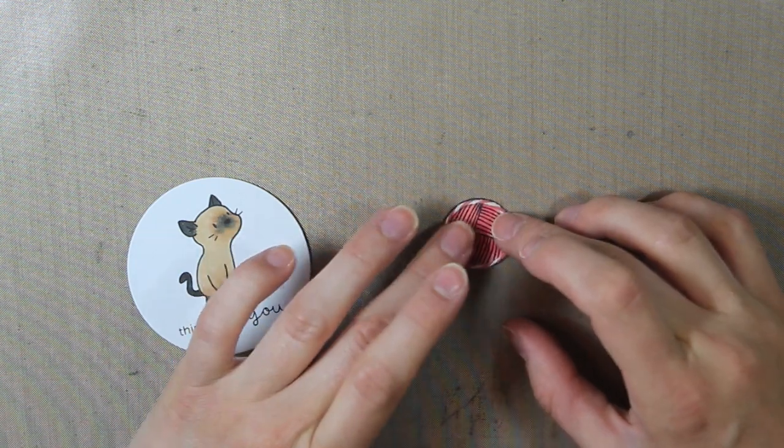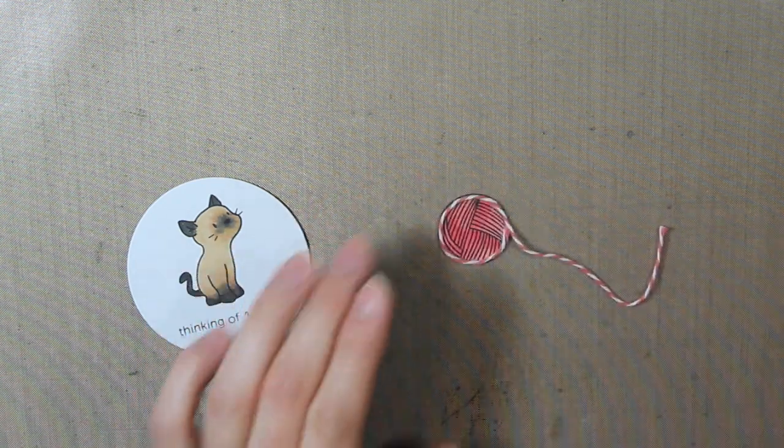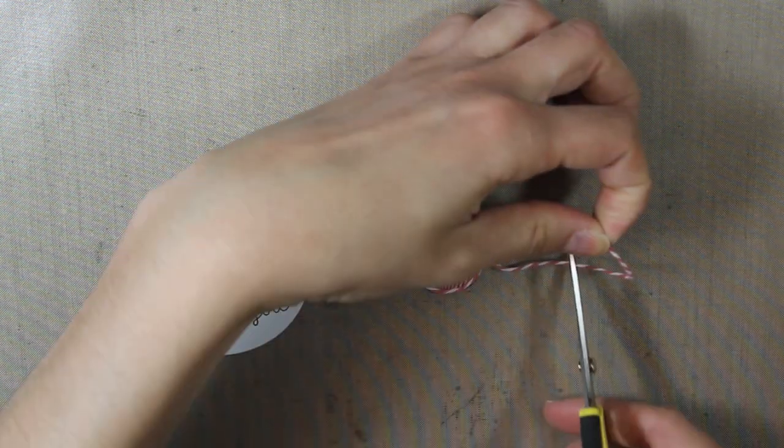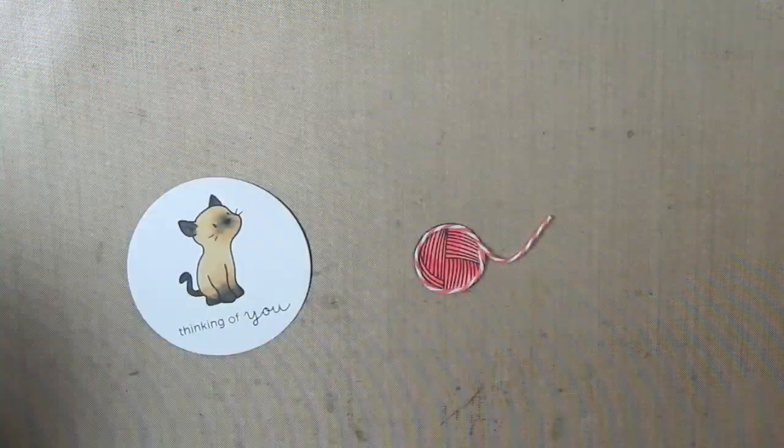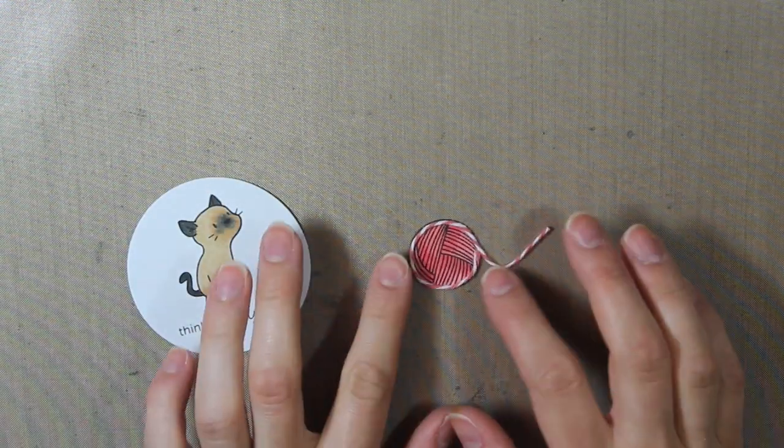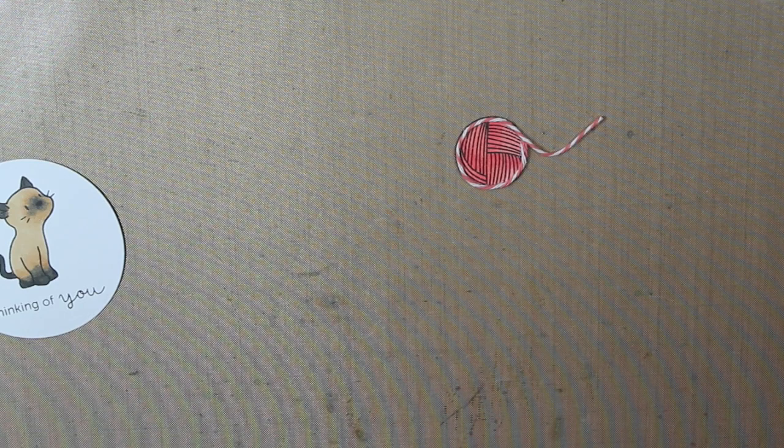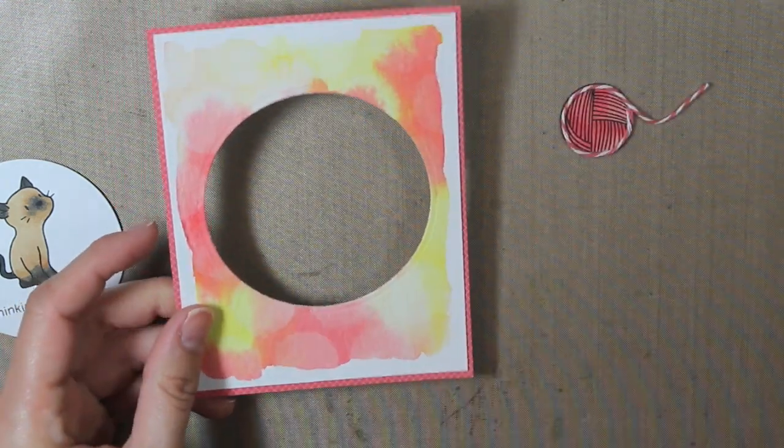And once I get all the way around, I can go ahead and trim off the excess. I want to leave a little bit hanging though so that it looks like it is coming unrolled, like the kitten was playing with it. Alright, so now it's time to assemble the shaker card. Or not the shaker card, the spinner card.